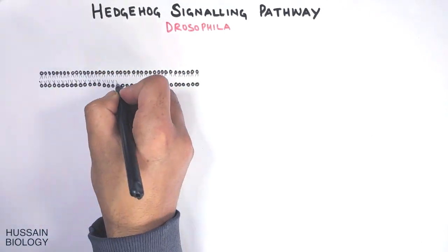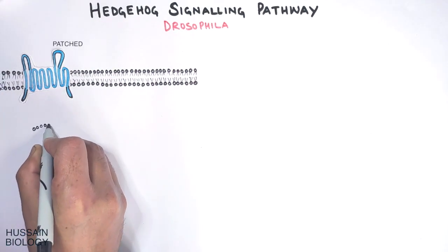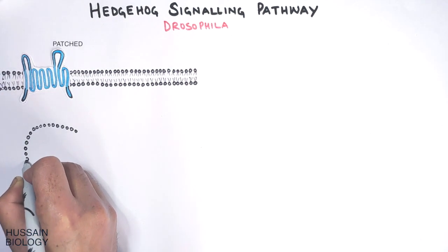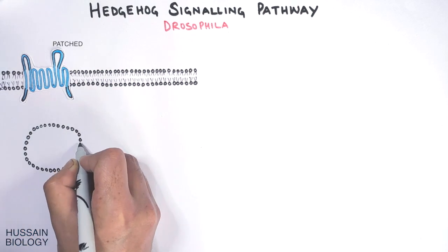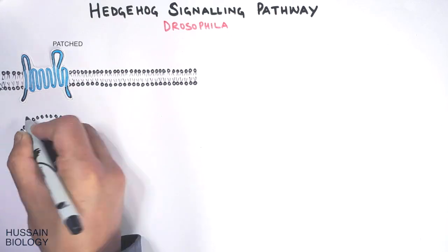We have the plasma membrane on which the Patched receptor protein is embedded. It's a 12 transmembrane protein that receives the hedgehog protein and imparts the signal. On the inner side of the cell we have vesicles in the cytoplasm.